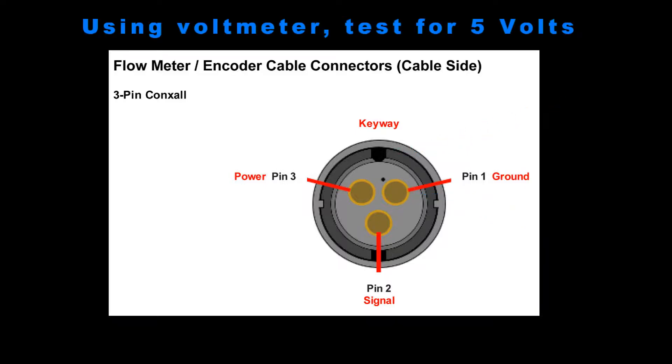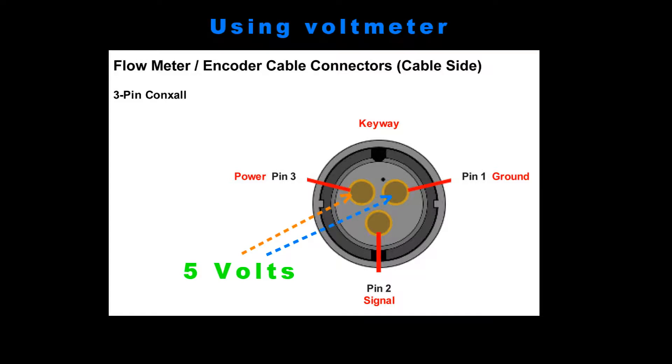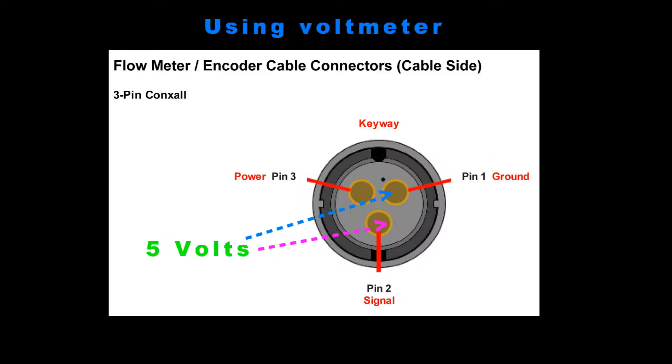The correct voltage is 5 volts. You would have 5 volts when you put your lead on the ground and on the power. You need to have a constant 5 volts. And then the signal to the ground is the same thing. Put your lead on the ground and put your lead on the signal and you'll have 5 volts also.